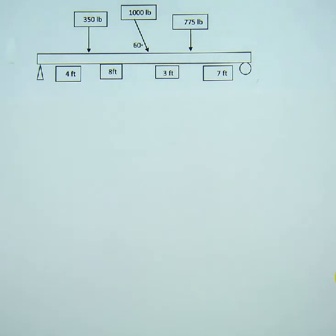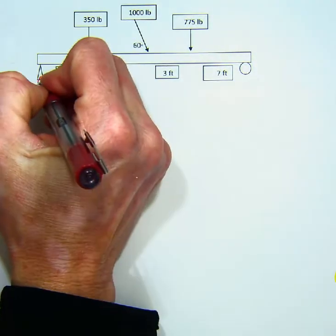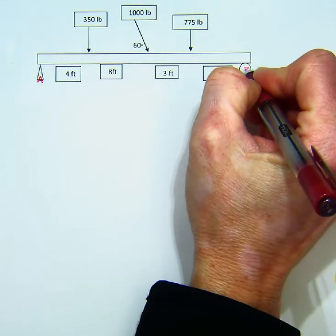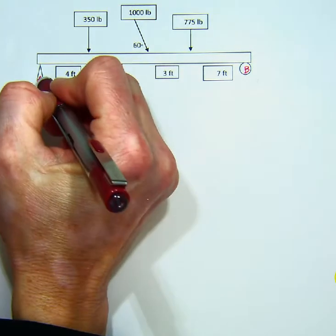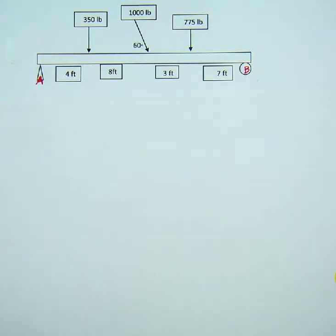So we're still going to label the pin A and the roller B. I need to draw a free body diagram, but before I do,